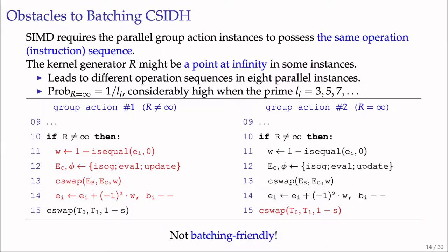The operation sequence in OAYT group action also relies on whether the kernel generator R is infinity, which depends only on randomness. In the first instance, generator R is not a point at infinity, while in the second instance it is infinity. Instances 1 and 2 will later perform different operations, causing a mismatch which is a problem for SIMD. The probability for a point of order Li to be infinity is 1/Li, which is considerably high when Li is small, e.g., 3, 5, or 7 in CSIDH.